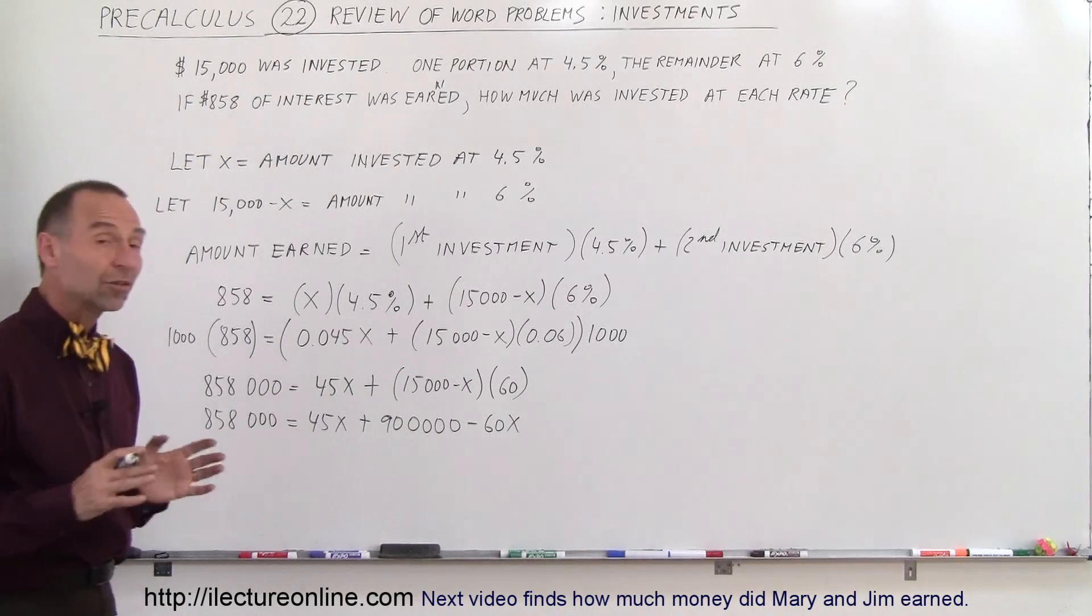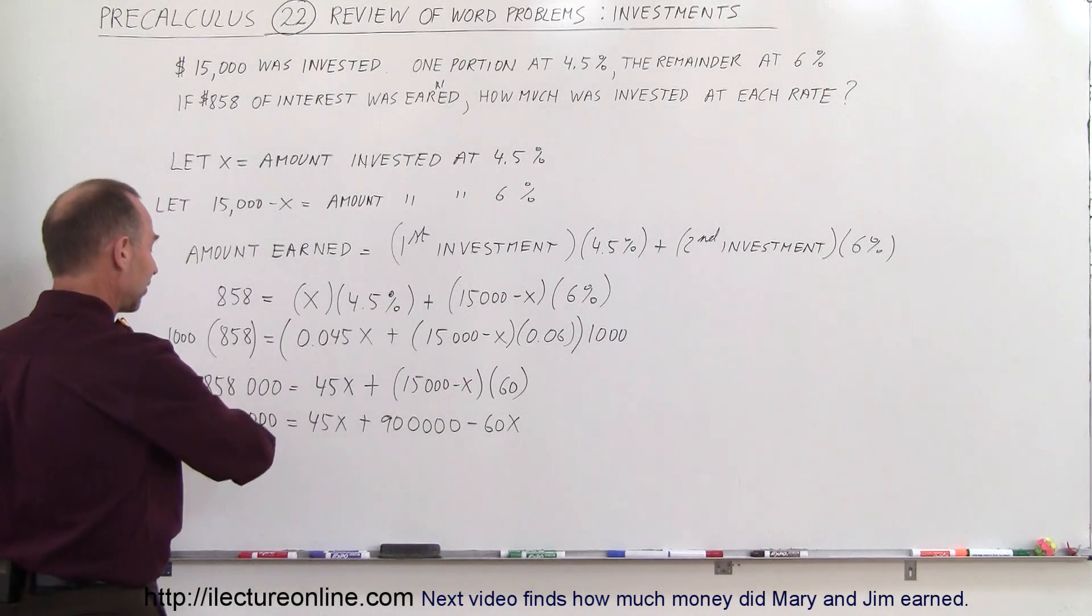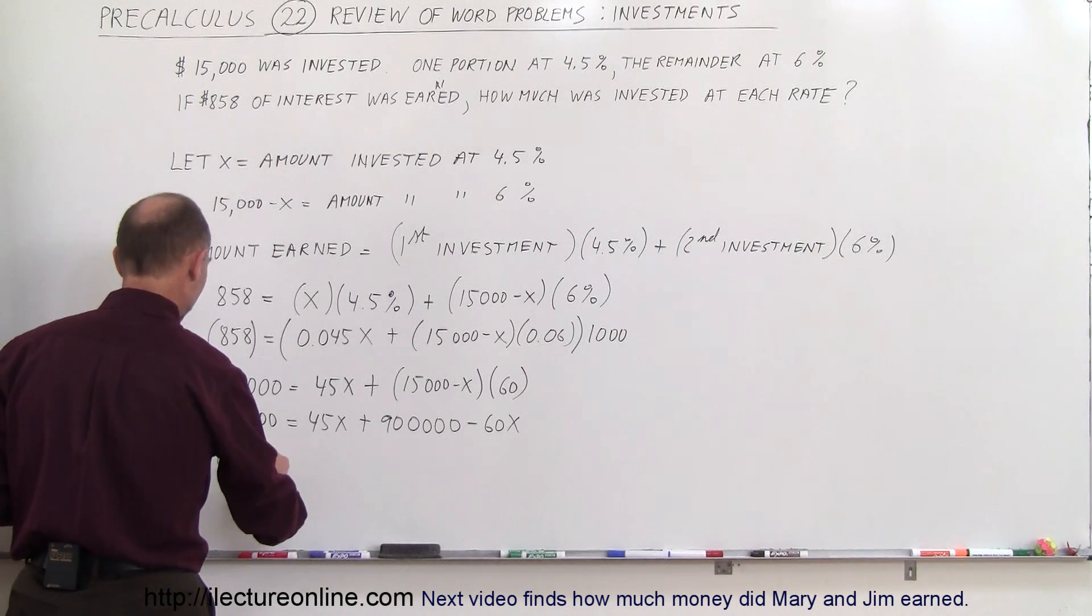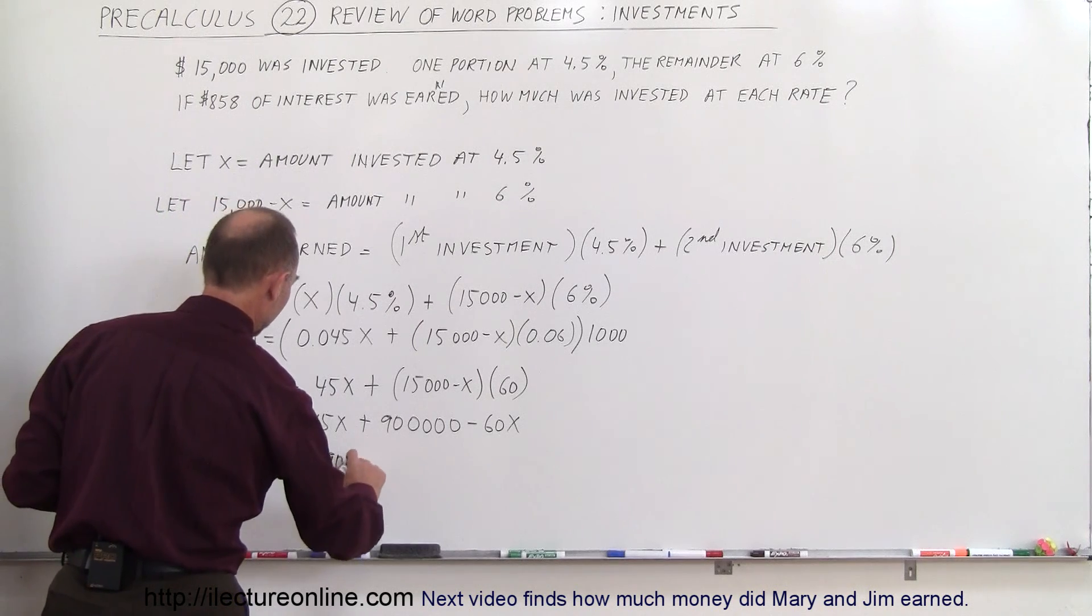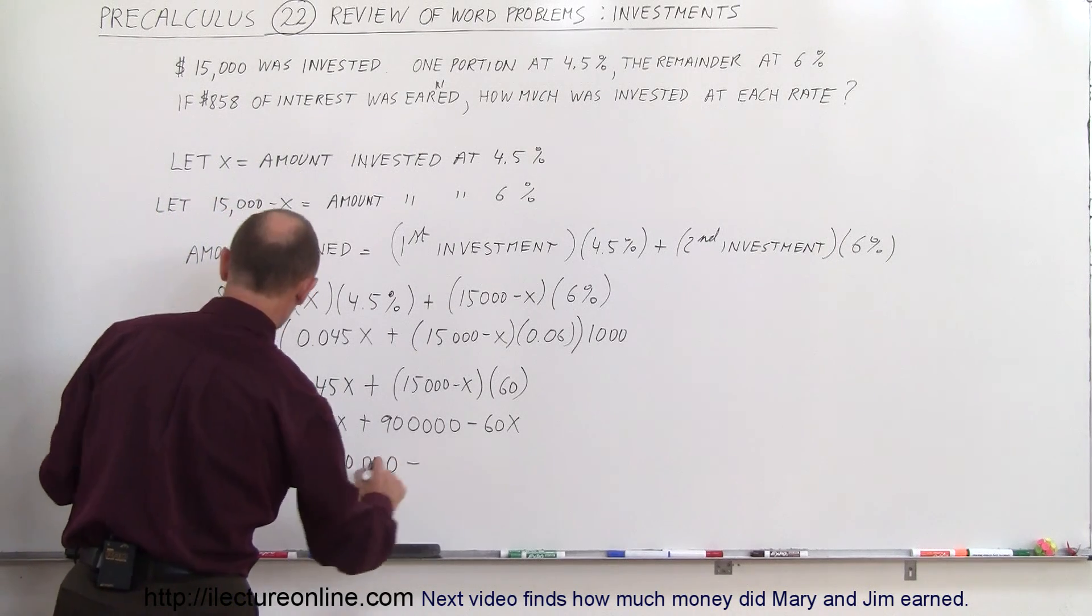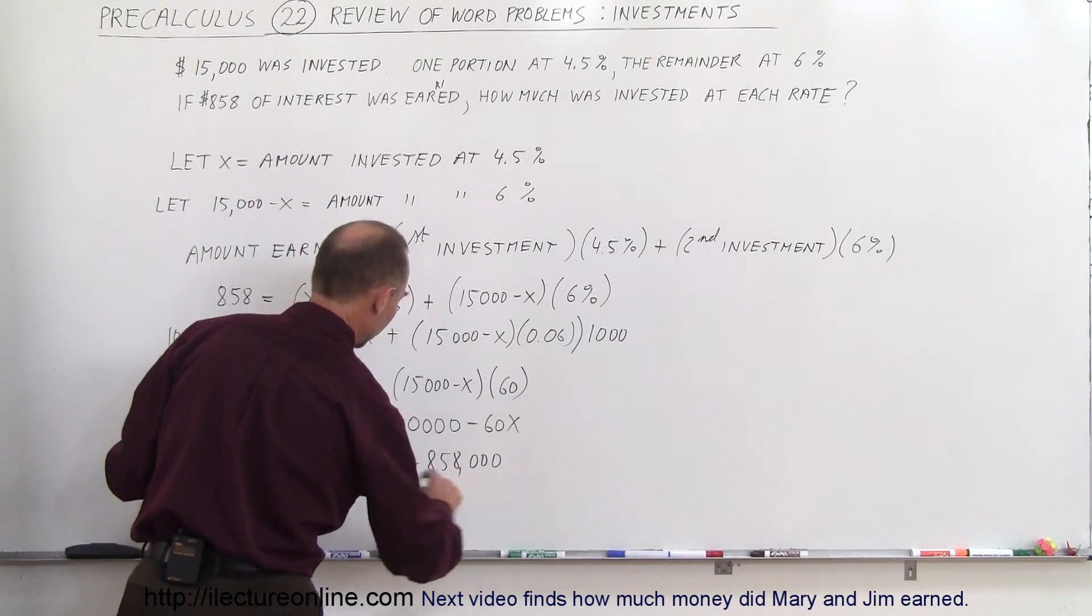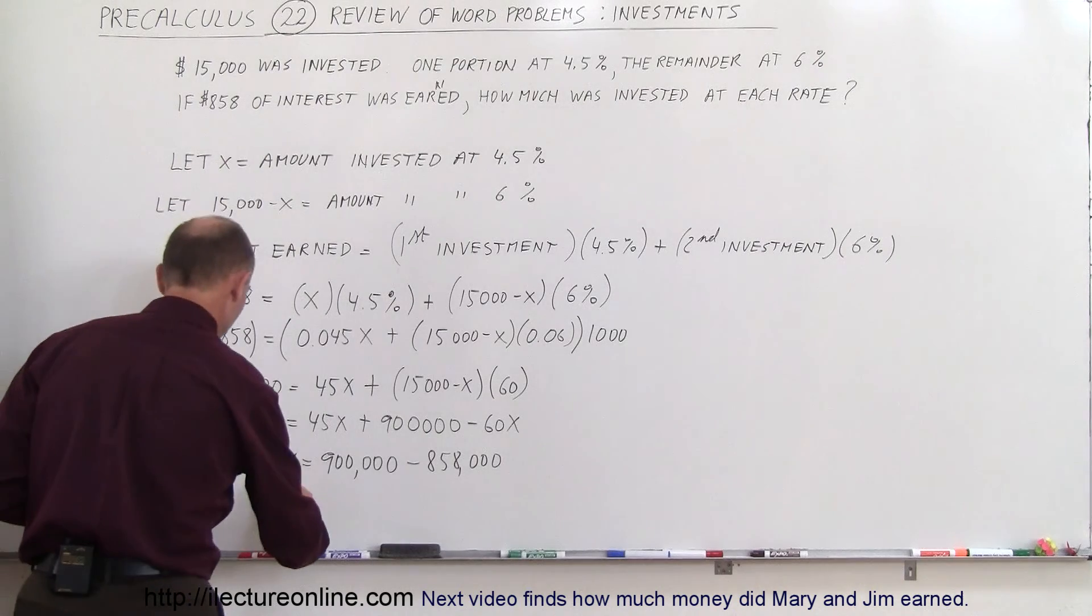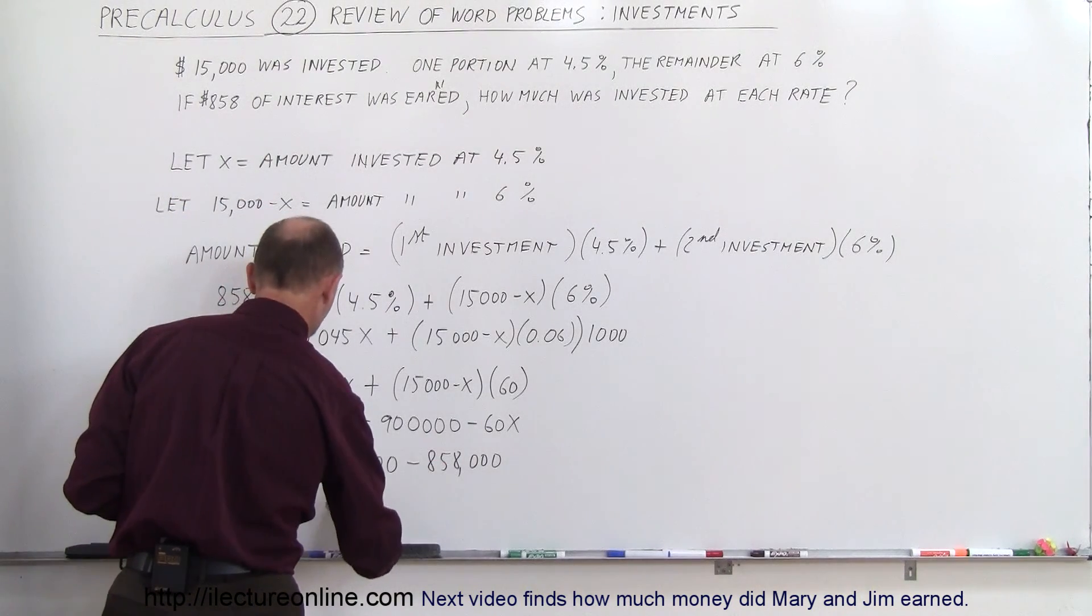And finally we're now ready to start solving this for x. So we're going to move everything with an x to the left side, everything else to the right side. So it gives us a positive 60x minus 45x is equal to 900,000 minus 858,000. We're almost there. Now we combine like terms. So we have 15x is equal to the difference between these two would be 42,000.